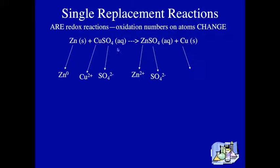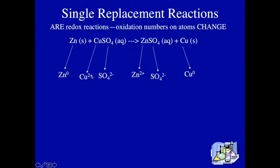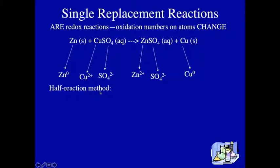If enough zinc is added to take out all of the copper two sulfate, we get copper coming out. The copper has a zero charge, so copper went from a plus two charge to zero. The only way that could happen is if copper gained two negative charges to cancel out the two positive charges, meaning it gains two electrons. Zinc goes from zero to a plus two charge, so it needed to lose two negative charges. We'll look at that more closely with the half-reaction method of handling redox reactions.